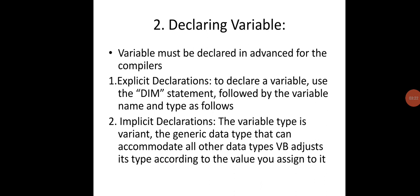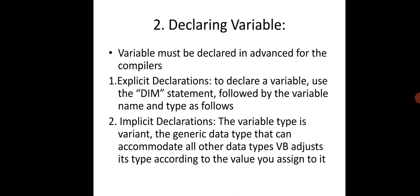Now we will look at the types of variables. The first is the variable naming convention. A variable name must begin with a letter, cannot contain any type of declaration characters, must not exceed 255 characters, and must be unique within its scope.